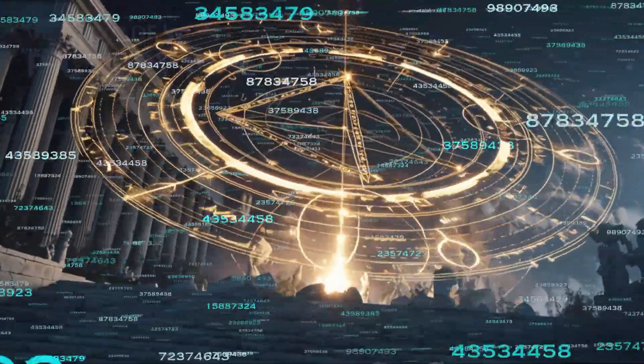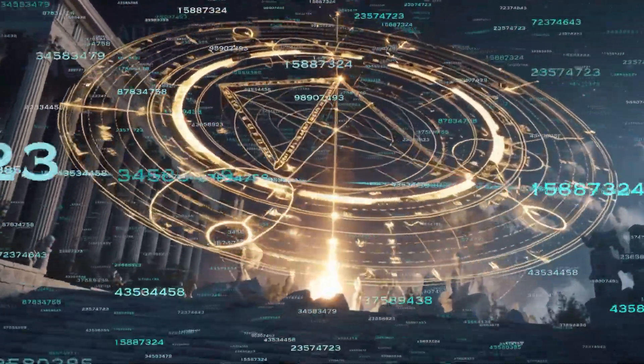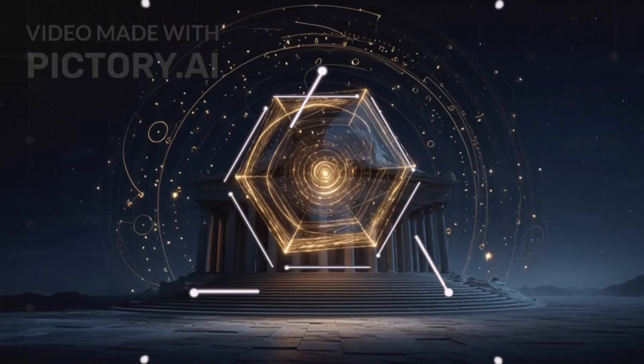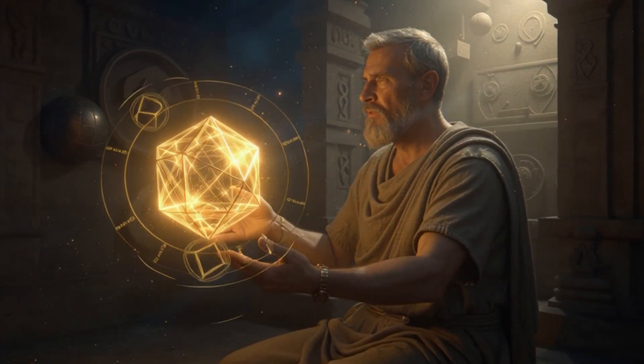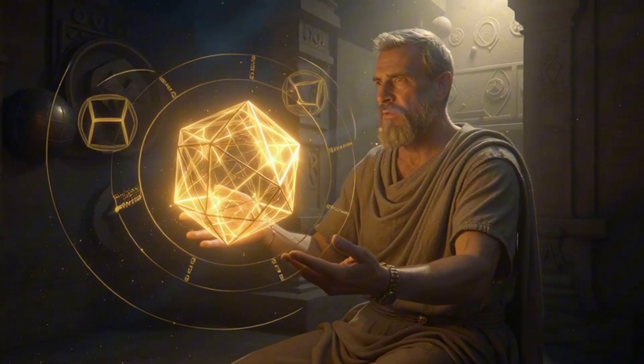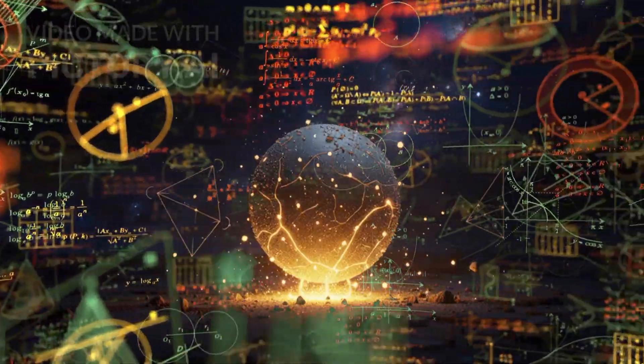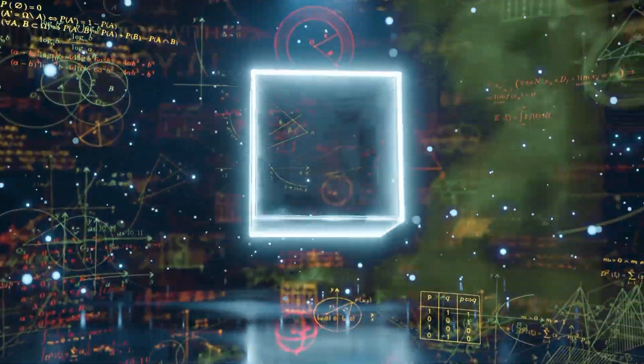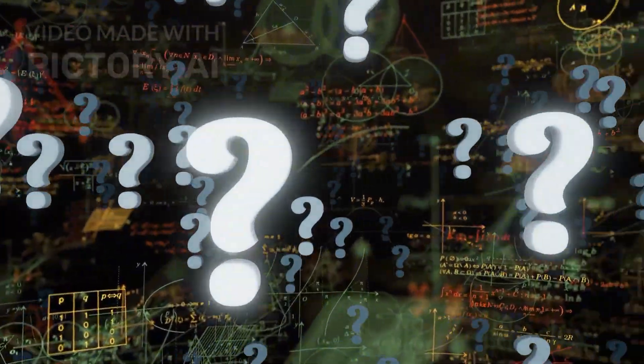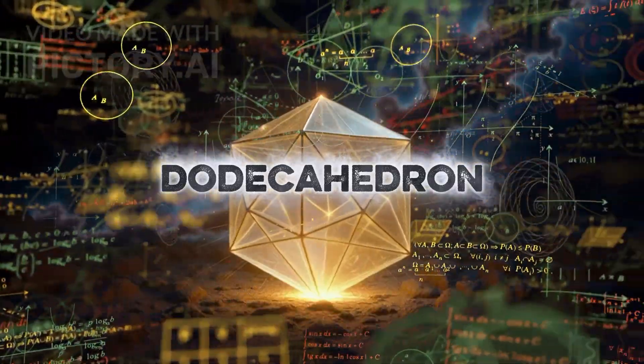There is a shape hidden in mathematics for thousands of years. A shape so mysterious that the ancient Greeks believed it held the blueprint of the universe itself. Not the sphere, not the cube, but a far more secret one. The dodecahedron.